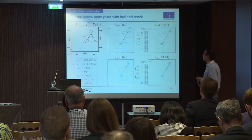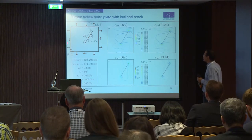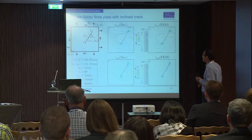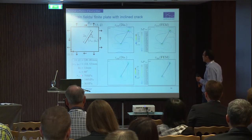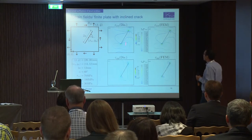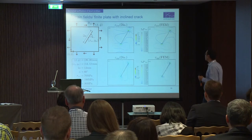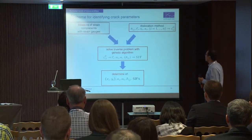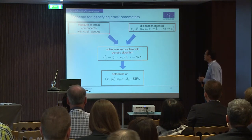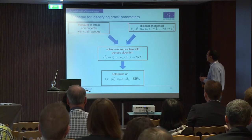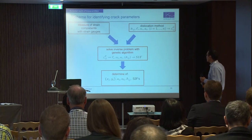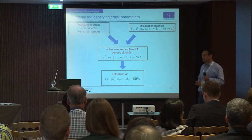I want to present some numerical results of the direct problem. We have here a finite plate with an inclined crack, and the position of the crack is given here. We have the dimension of the plate, the length of the crack, the inclination of the crack, and the boundary loads. We have calculated the strain components epsilon-xx and epsilon-yy with the dislocation density method and compared them with the finite element method, and we can see that the results are similar. Now I come to the scheme for identifying the crack parameters: first, we measure the strain components with the strain gauges; then we calculate the direct problem with the dislocation method; then we solve the inverse problem with a genetic algorithm; and finally, we determine the crack parameters and the stress intensity factors.